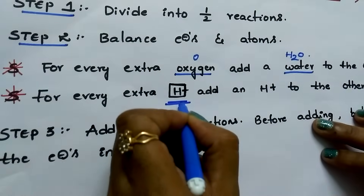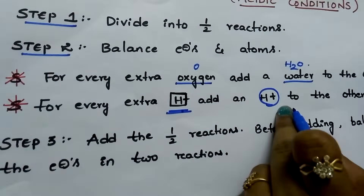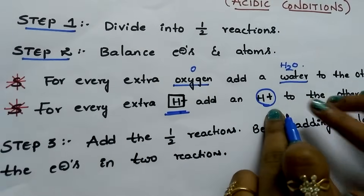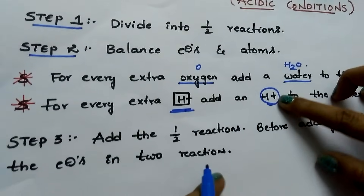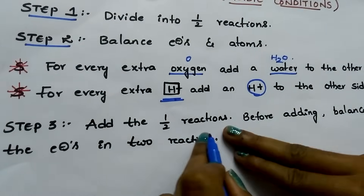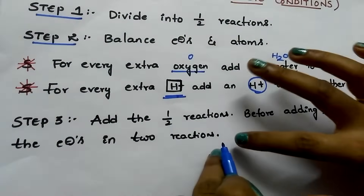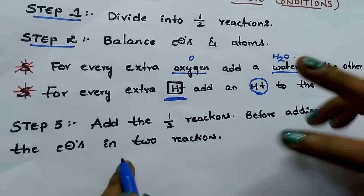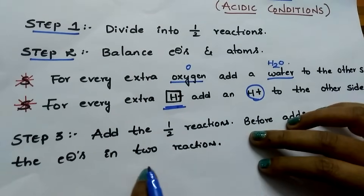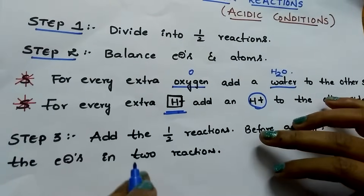For every extra hydrogen, you add H⁺ ions to the opposite side. After balancing oxygen and hydrogen, now you have to add the two reactions. Before adding the two half reactions, you should balance the number of electrons in the two reactions. Multiply the two reactions with a suitable number. Now, let us see an example.